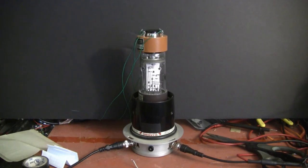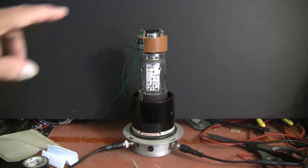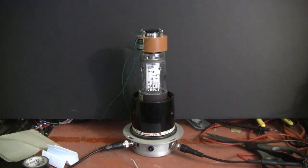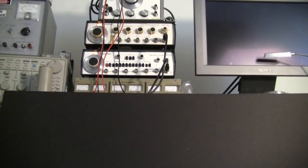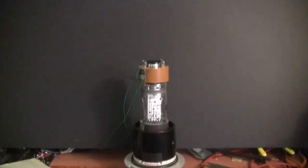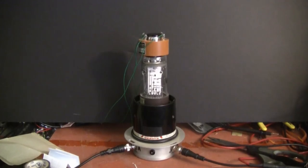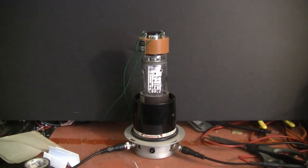So this is the current test setup. The x and the y inputs of the scope are driven with two audio signal generators. Conveniently, they have 50 ohm output impedance. The yoke is 47 ohms, and then it's connected to the oscilloscope operating in x and y mode.